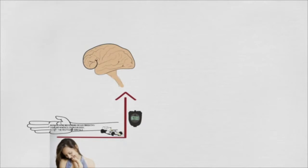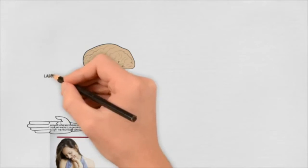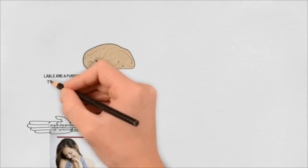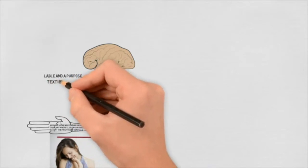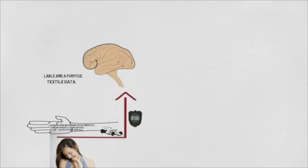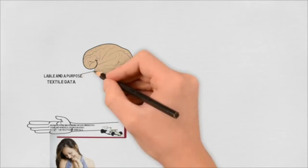In the brain itself, it will receive a label and a purpose. So the teddy is to cuddle, a pen is to write, a brick to construct, a screw to work. We are also collecting textile data like the temperature, is it smooth, is it rough, is it soft, is it solid, etc.